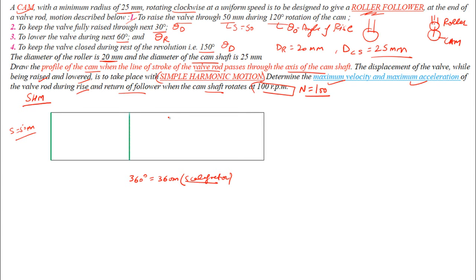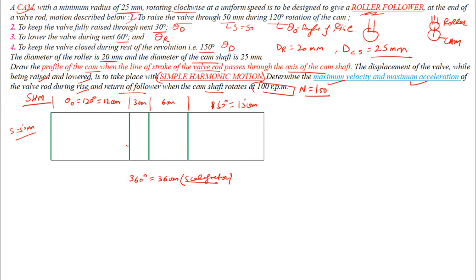The angle of rise (120°) is taken as 12 cm, the dwell (30°) as 3 cm, and the return (60°) as 6 cm. The remaining dwell of 150° is 15 cm. This divides the 360° baseline into ascent, dwell, descent, and the final dwell phase.